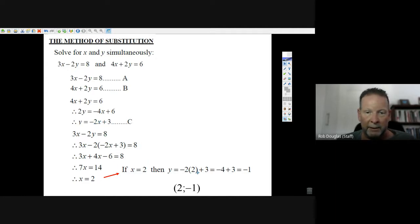Instead of x, put in a 2. So we have minus 2 times 2 is minus 4, plus 3. Minus 4 plus 3 is minus 1.